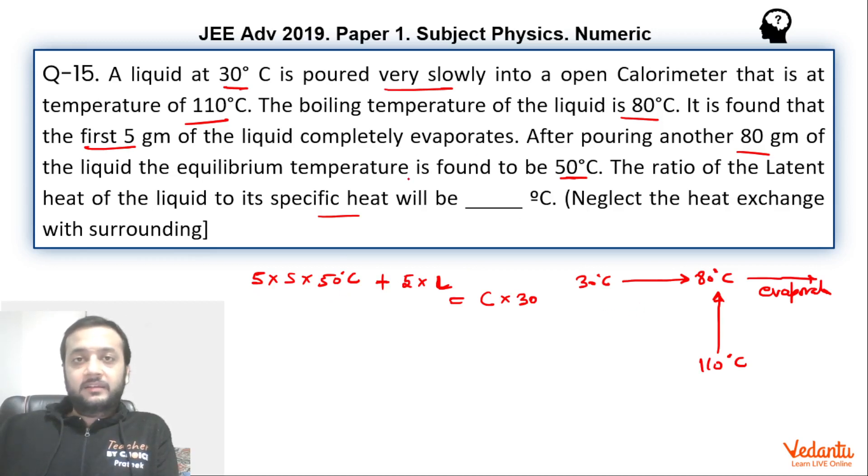After that another 80 grams of liquid when we pour from the initial temperature of 30, equilibrium temperature becomes 50. That means for the next 80 grams m into s into delta t will be 20 degrees celsius because it has come from 30 to 50. And in the meanwhile, the calorimeter has come from 80 to 50.